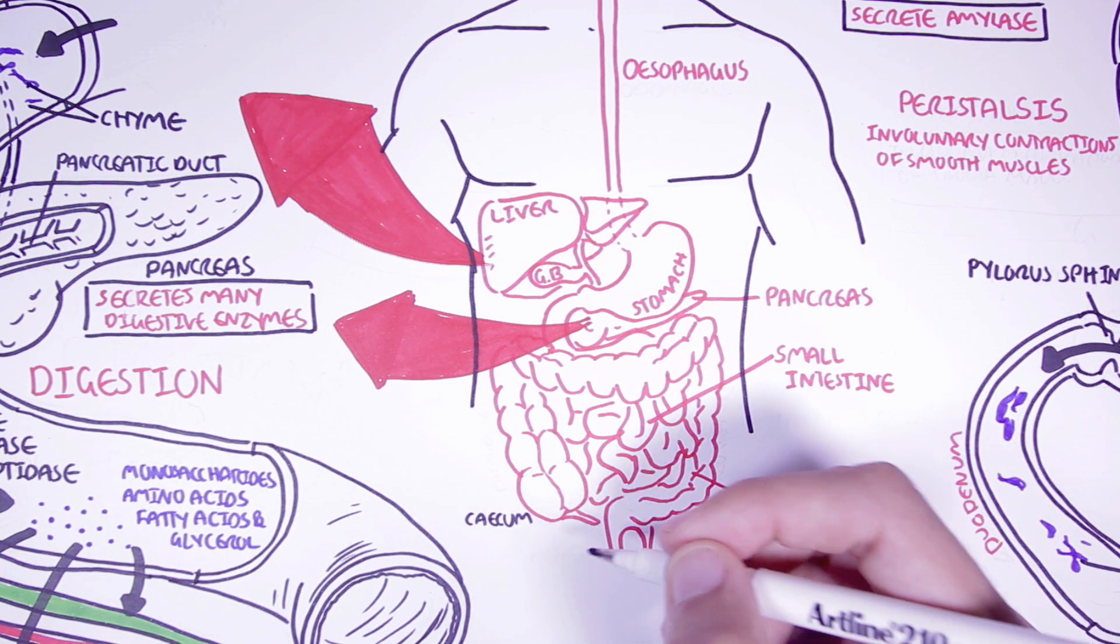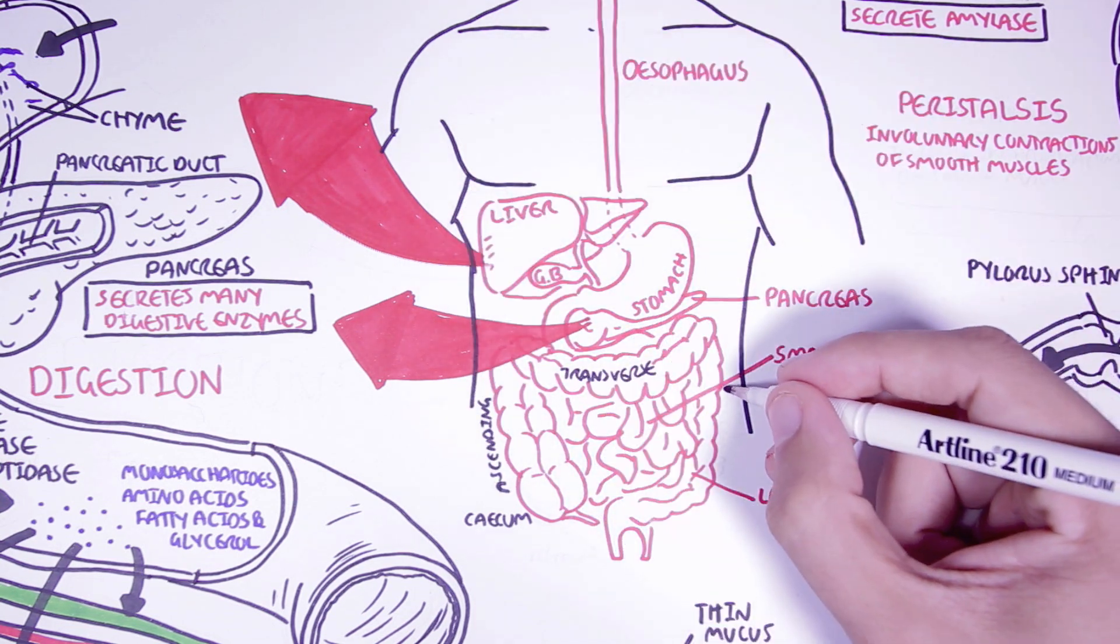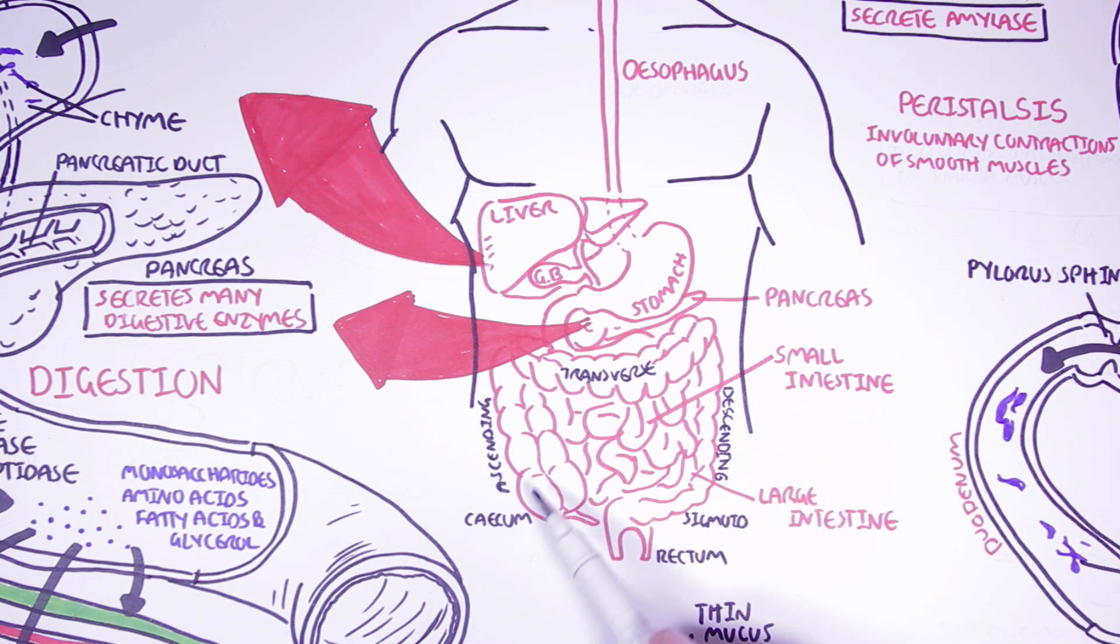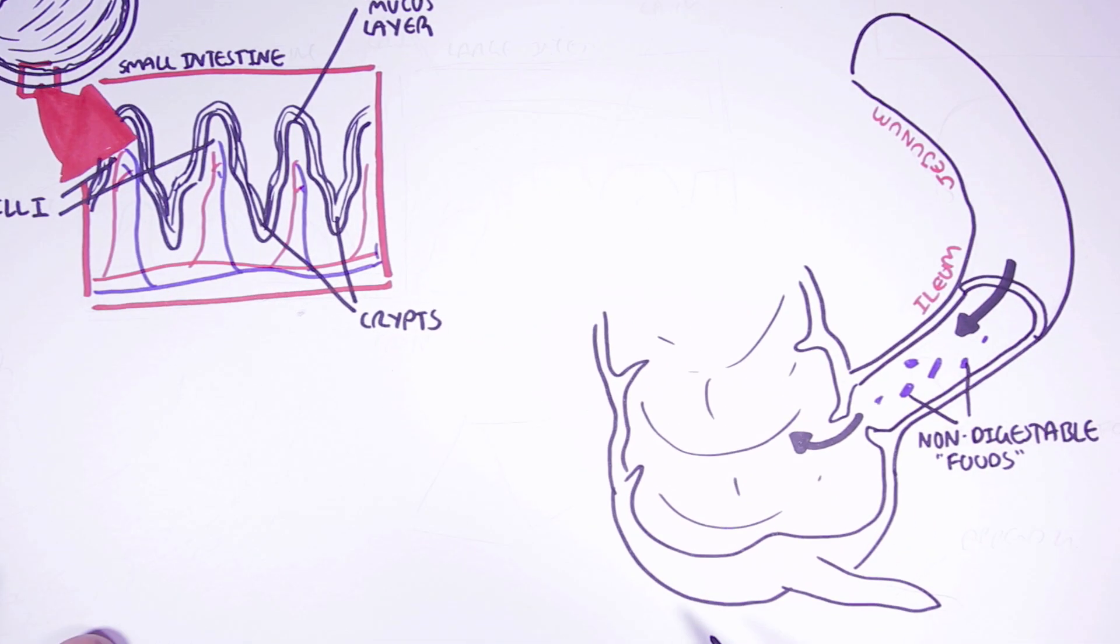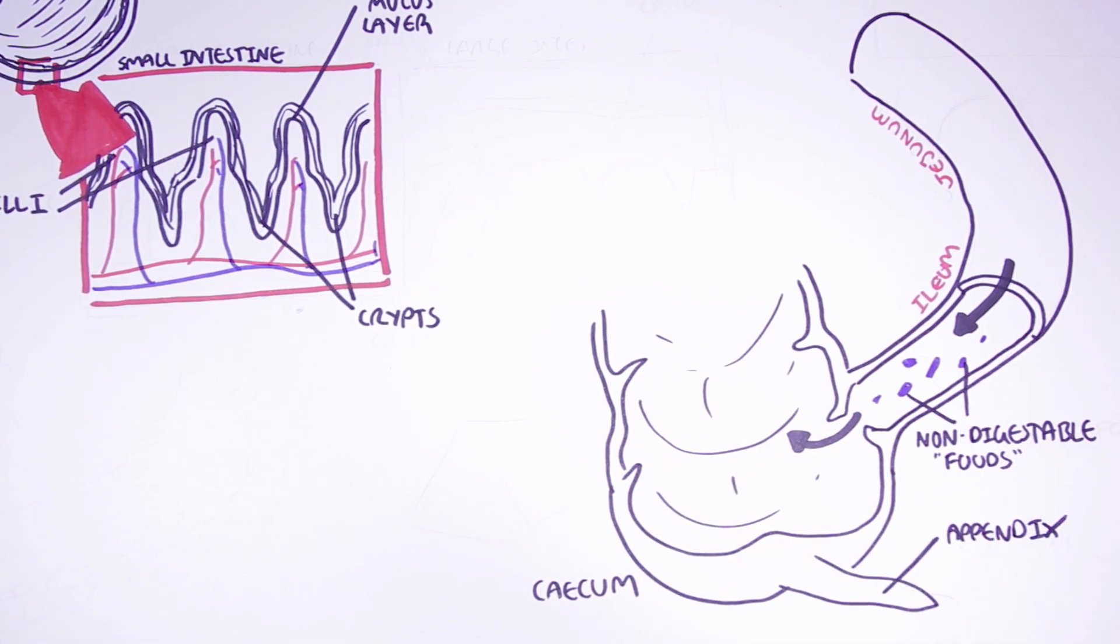The large intestine is divided into a few sections: the cecum, the ascending colon, transverse colon, the descending colon, the sigmoid colon and the rectum. There is also the anus region. This pointy bit here is known as the appendix. It has a role in the immune system.